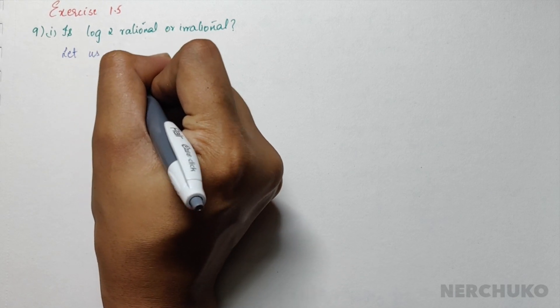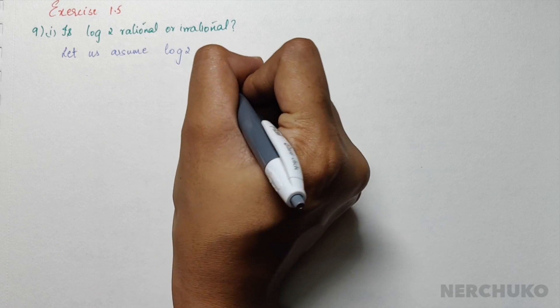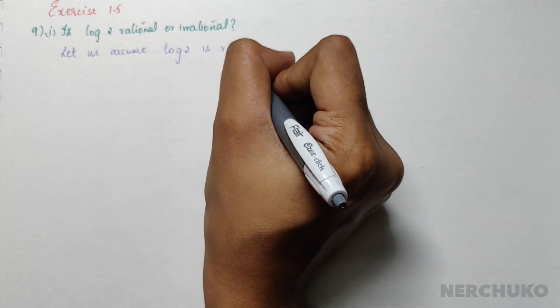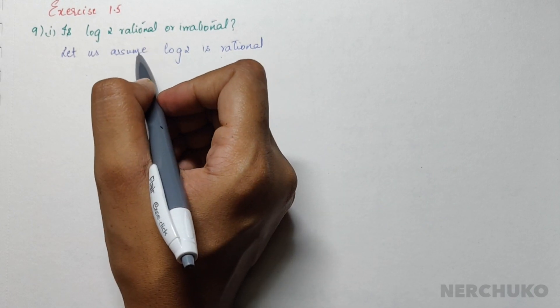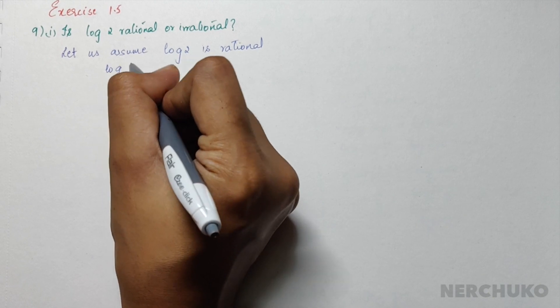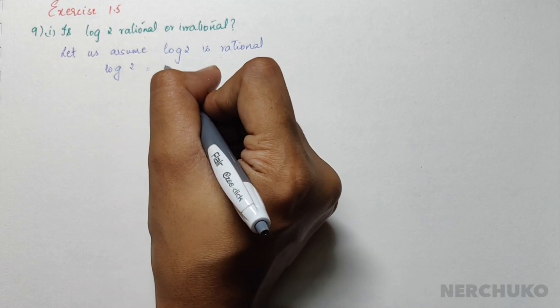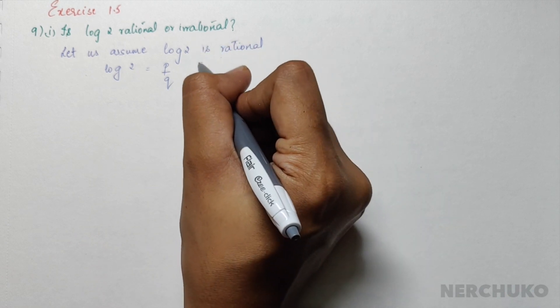Let us assume log 2 is rational. So if it is a rational number, then it should be in the form of p by q. So log 2 equals p divided by q, where p and q are coprimes.